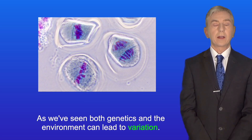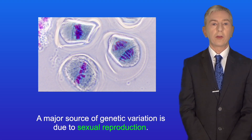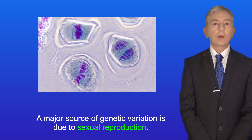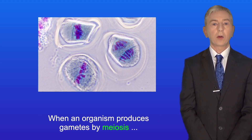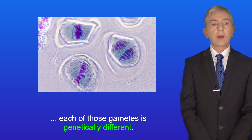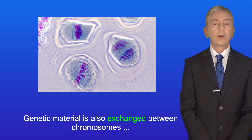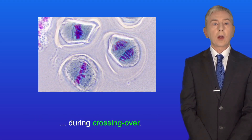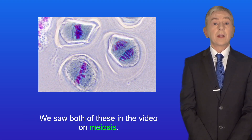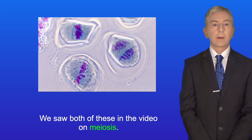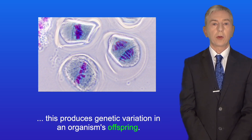So as we've seen, both genetics and the environment can lead to variation. Now a major source of genetic variation is due to sexual reproduction. When an organism produces gametes by meiosis, each of those gametes is genetically different. During meiosis, chromosomes are shuffled by independent assortment. Genetic material is also exchanged between chromosomes during crossing over, and we saw both of these in the video on meiosis. Because gametes are genetically different, this produces genetic variation in an organism's offspring.